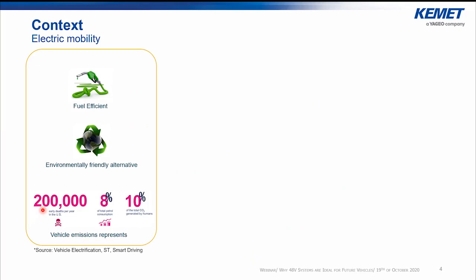The context of the 48-volt systems is electric mobility. Today, vehicle CO2 emissions represent 10% of the total CO2 generated by humans and 8% of the total petrol consumption, causing more than 200,000 early deaths per year in the US. To overcome these issues, or at least to reduce their impact, the electrification of vehicles was introduced as a step forward towards a more fuel-efficient and environmentally friendly alternative.